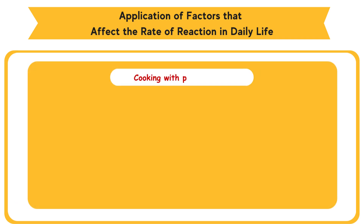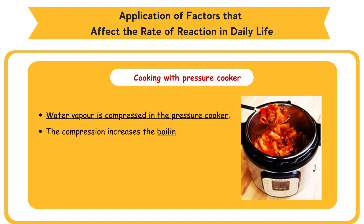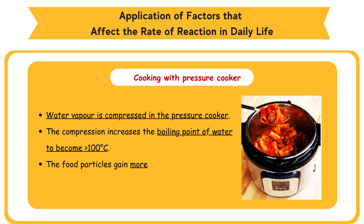Cooking with Pressure Cooker. Water vapor is compressed in the pressure cooker. The compression increases the boiling point of water to become more than 100 degrees Celsius. The food particles gain more kinetic energy. Hence, food is cooked more quickly.